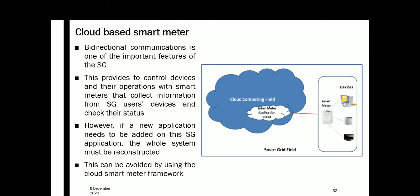As an example, here is a cloud-based smart meter taken from a paper. Bi-directional communication is one of the important features of smart grid. This provides control of devices and their operation, with smart meters collecting information from smart grid users' devices and checking their status. However, if a new application needs to be added to this smart grid application, the whole system must be restructured — that is a disadvantage of a conventional system.